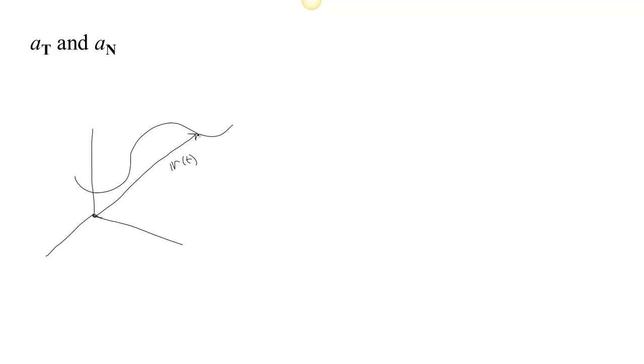If you have this vector r of t and you look at its derivative, you get this vector r prime of t, or we could call that v of t because it's the velocity, that's tangent to the curve. And then we could look at how the velocity changes as you go along the curve.